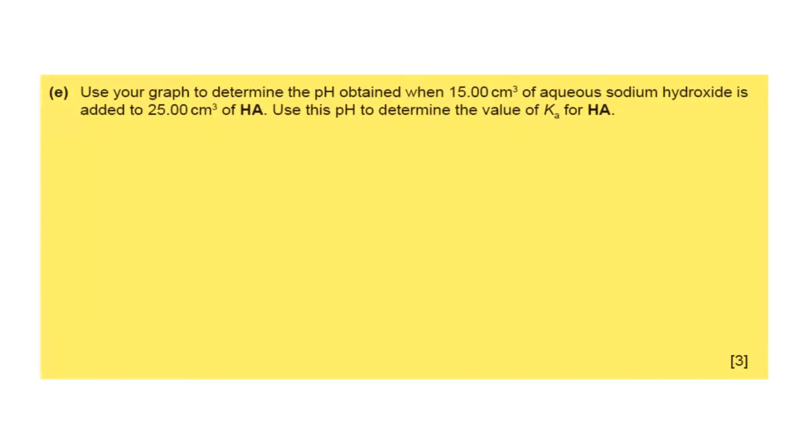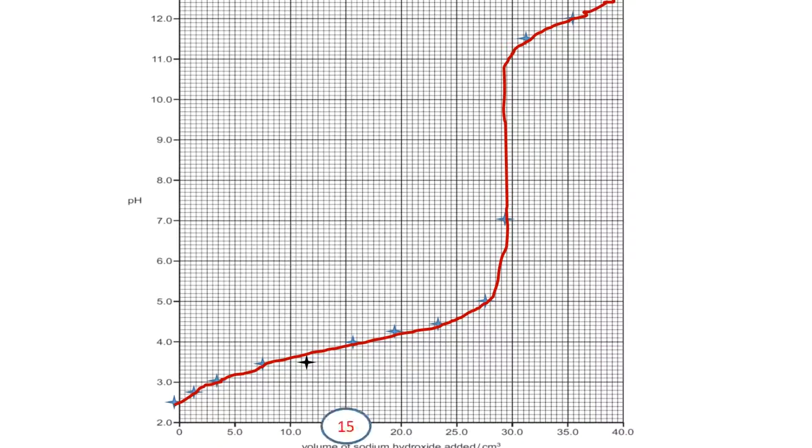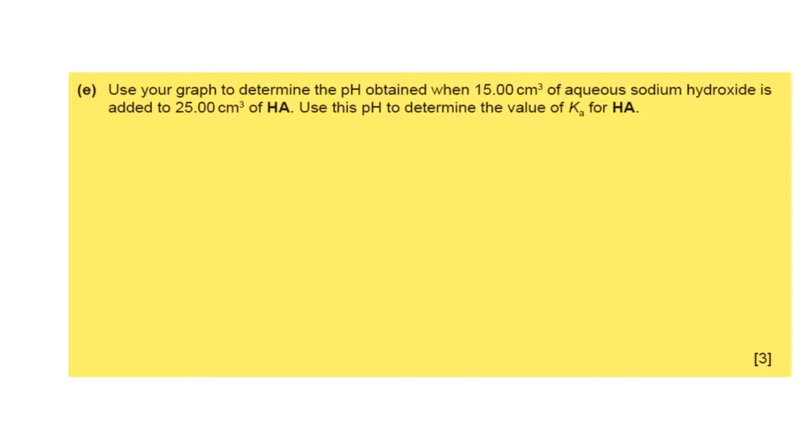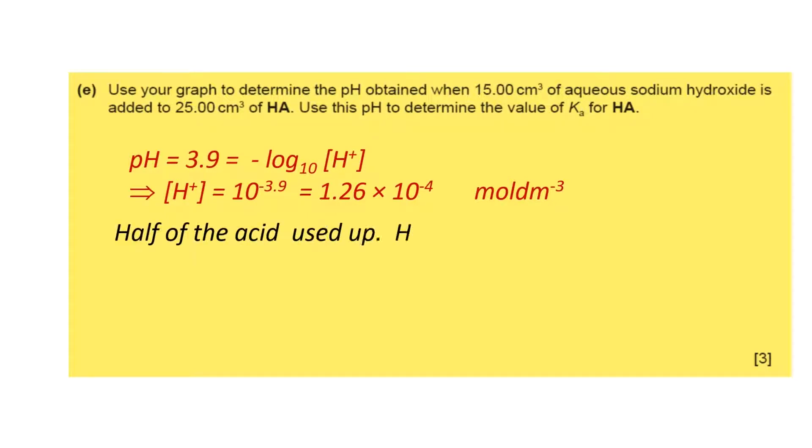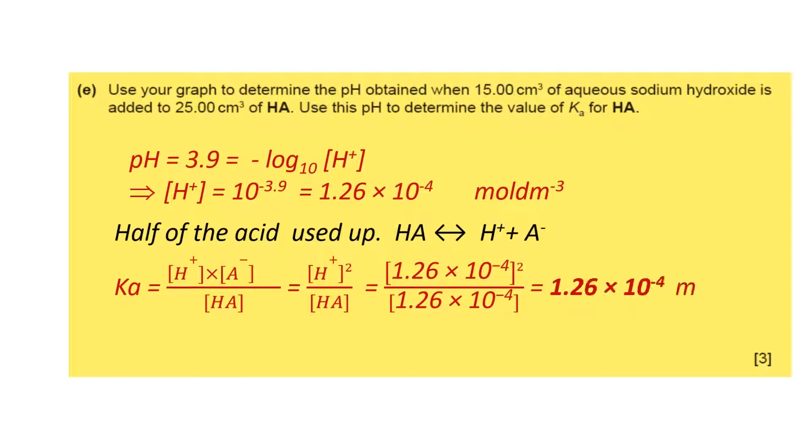Use your graph to determine the pH obtained from 15 cm³ of aqueous sodium hydroxide. From the curve, at 15 cm³ of sodium hydroxide, the pH is 3.9. So pH 3.9 equals minus log[H⁺]. From here, H⁺ is 1.26 × 10⁻⁴. The acid dissociation constant equation is Ka = [H⁺][A⁻]/[HA]. Putting this value of H⁺ and A⁻, we get 1.26 × 10⁻⁴.